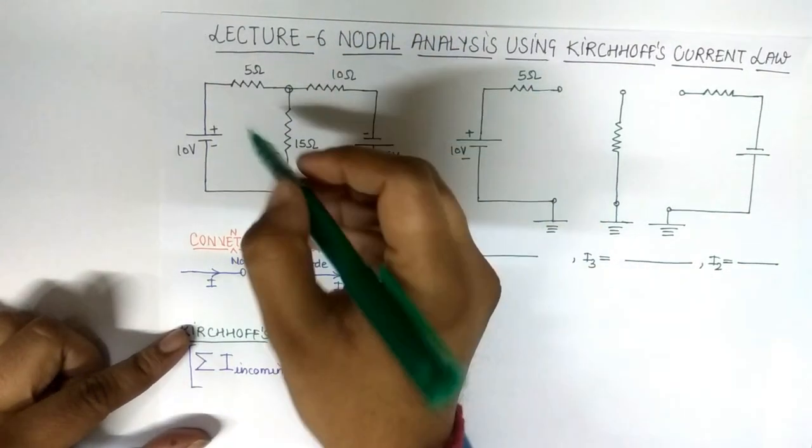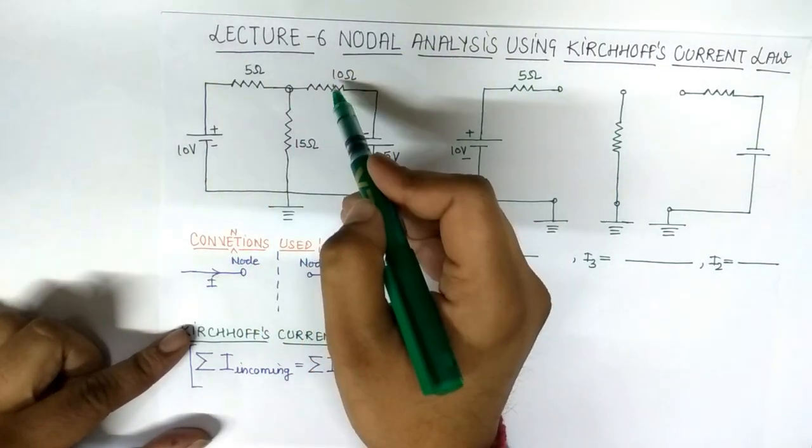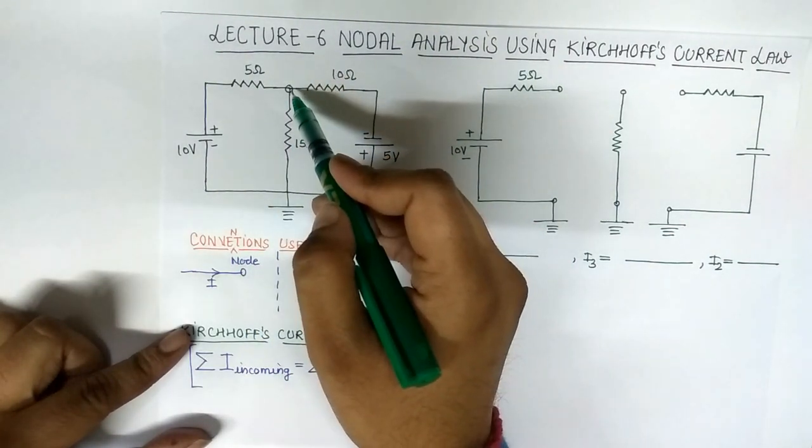So this is a junction at which more than two circuit elements are connected: 5 ohm, 15 ohm, and 10 ohm. That is why we assume this is a node. Let us say this is node A and its potential is VA.